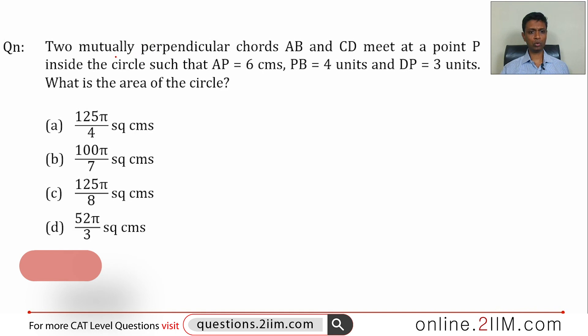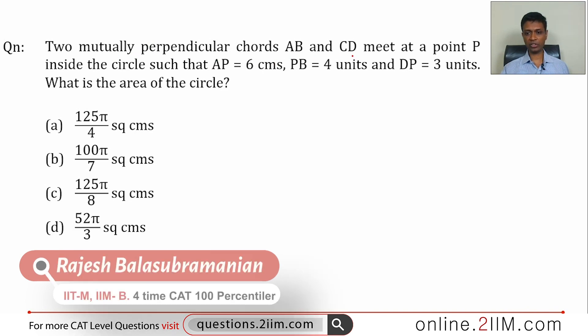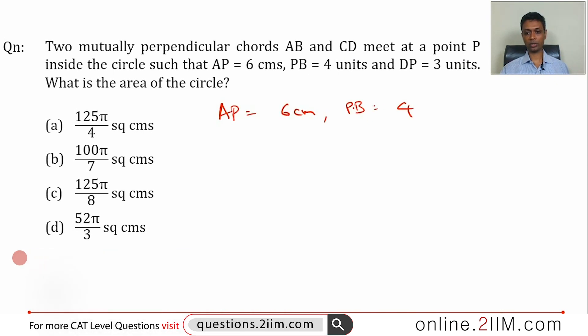Two mutually perpendicular chords AB and CD meet at a point P inside the circle such that AP is 6 centimeters, PB is 4 units, and DP is 3 units. What is the area of the circle? AP is 6, PB is 4, DP is 3.